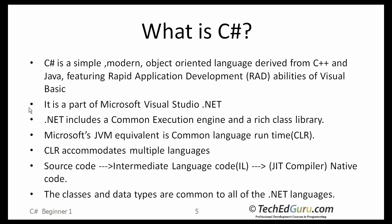C-Sharp is a part of Microsoft Visual Studio .NET. The .NET includes a common execution engine and rich class library. Microsoft's JVM equivalent is the Common Language Runtime, also called CLR. CLR accommodates multiple languages. When you take the source code written in any language — C-Sharp, VB, C++, etc. — it first gets compiled to intermediate language code. Then, when you run your application, it uses a JIT compiler, or just-in-time compiler, to compile it to the native code.